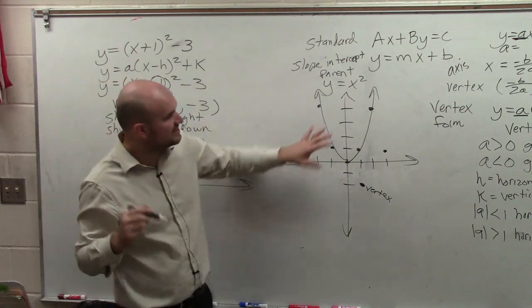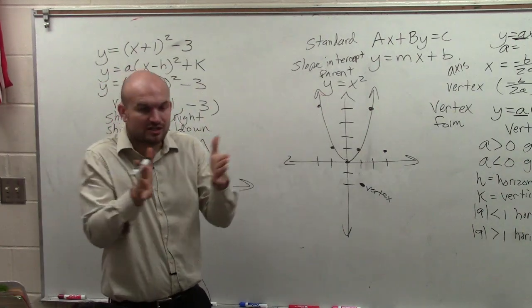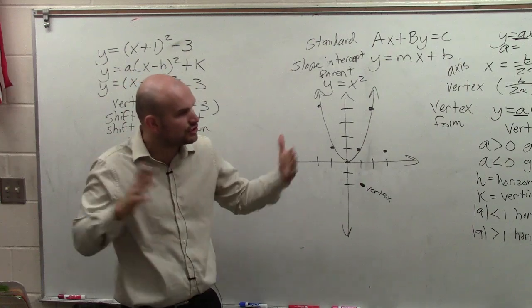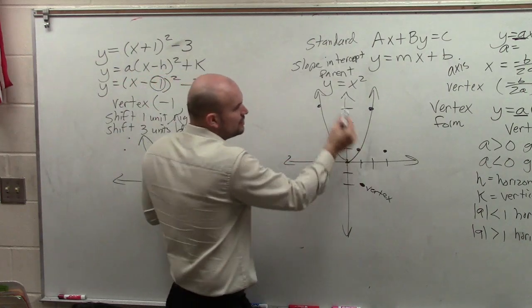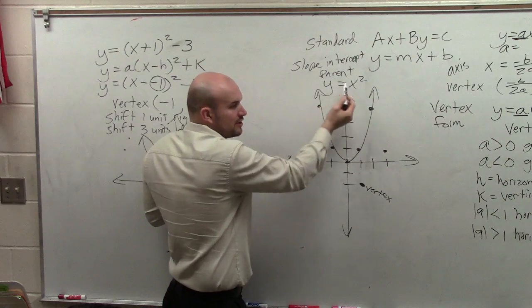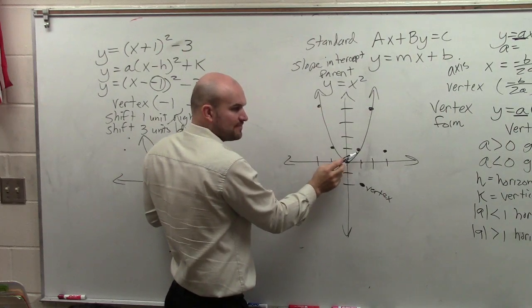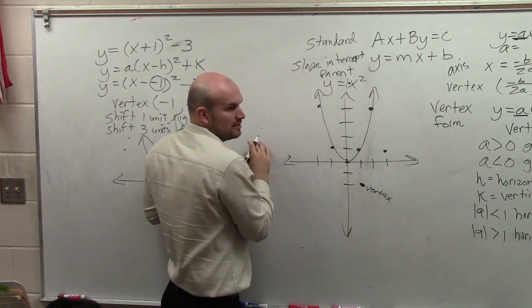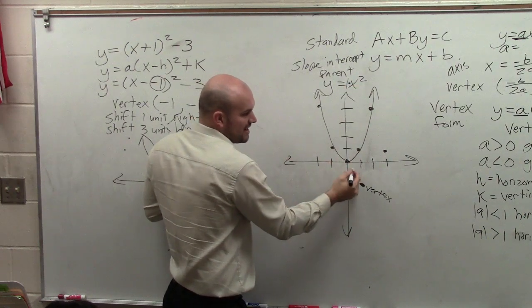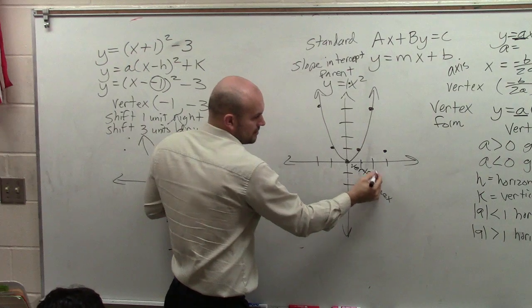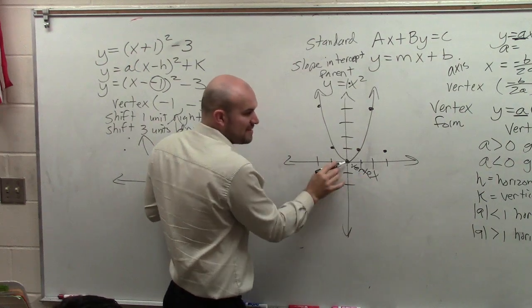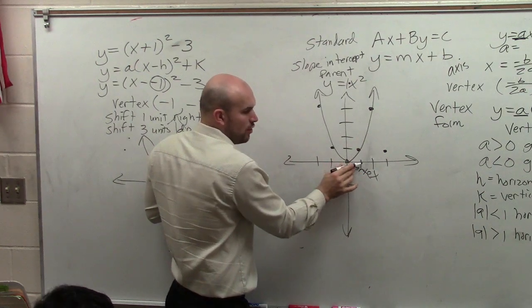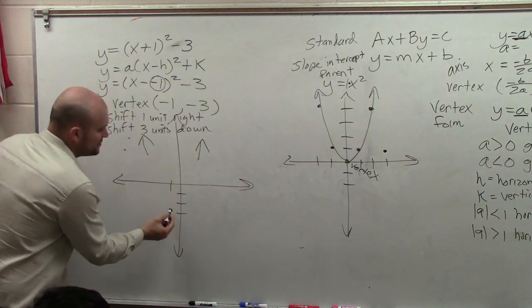Now, what's very helpful is, since our a is not compressing or stretching our graph, we can use the relationship of our parent graph to find our remaining points. Because remember, this is the parent graph where a is equal to 1. So therefore, here is my vertex. Here's my vertex. To find the next point, I go over 1, up 1. I can do that from here. Over 1, up 1.